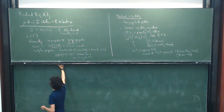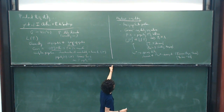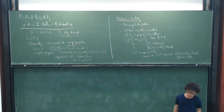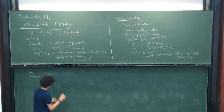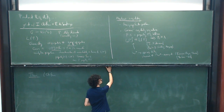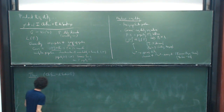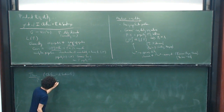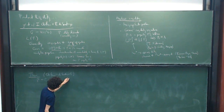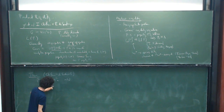I want to talk about a related, weaker type of rigidity, which will be product rigidity. Let me state the theorem. We have a countable discrete group written as a non-trivial product, and I want all of the factors in the product to be non-elementary hyperbolic ICC groups.